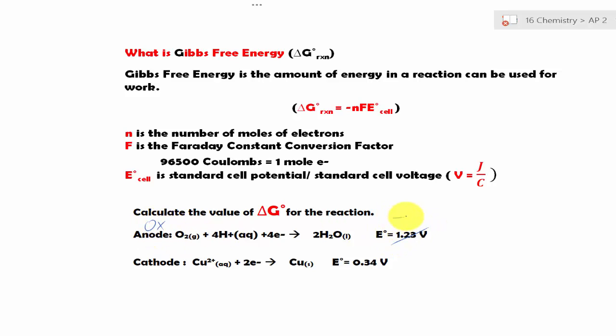So this has to be the opposite of it. Negative 0.23, because this is positive. Then we calculate for E_cell.